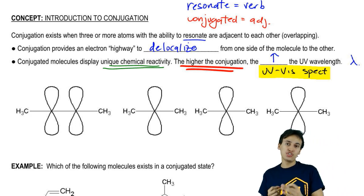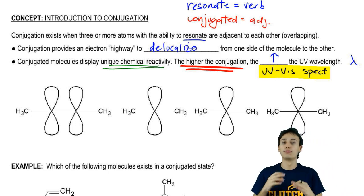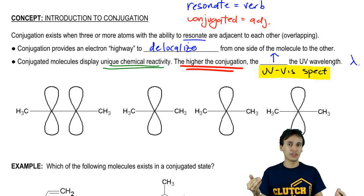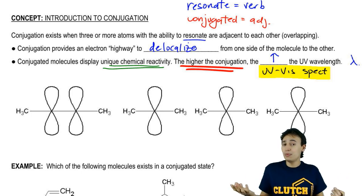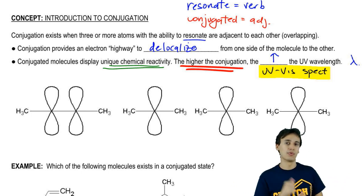Which is that as your conjugated compounds have more and more conjugation, meaning that more and more atoms can resonate together, the higher the wavelengths tend to be for this UV-vis spectrometer. This could be a multiple choice question or it could be a free response question that you get asked. That's just something that I wanted to throw in there.